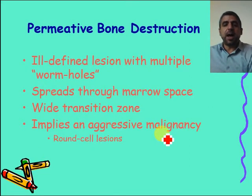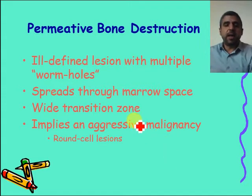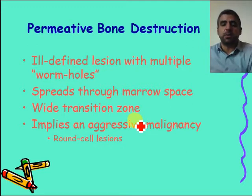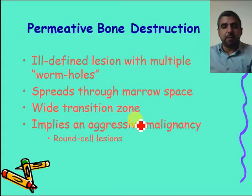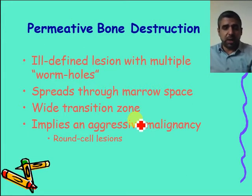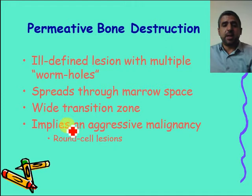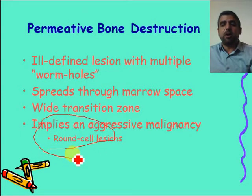The third type is permeative pattern of bone destruction. The tumor has ill-defined margins with multiple wormholes and spreads through the marrow space — through the medullary cavity, inside the bone, not on the cortex. It will have a wide zone of transition, implying aggressive malignancy — round cell tumors, multiple myeloma, and Ewing sarcoma, for example.